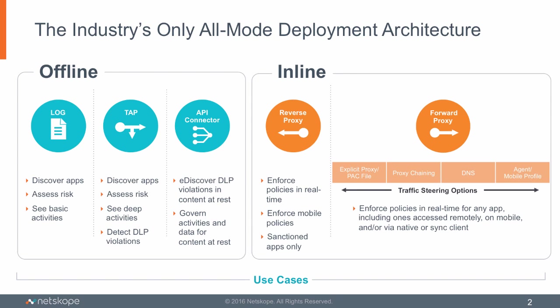Netscope is very flexible as far as the different deployment options we provide to customers. There are offline and inline options. I'm going to be focusing on the inline options, specifically the forward proxy type deployments that consist of either parent proxy, explicit PAC, DNS, or the steering client. These are all good options for securing non-sanctioned applications.